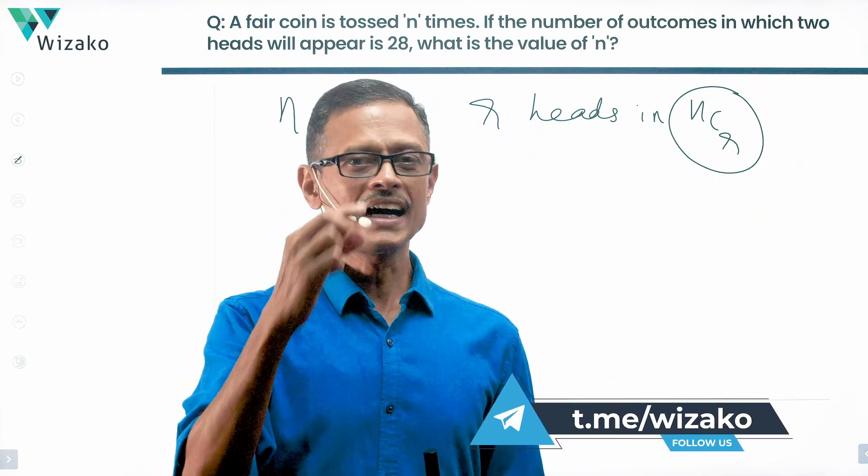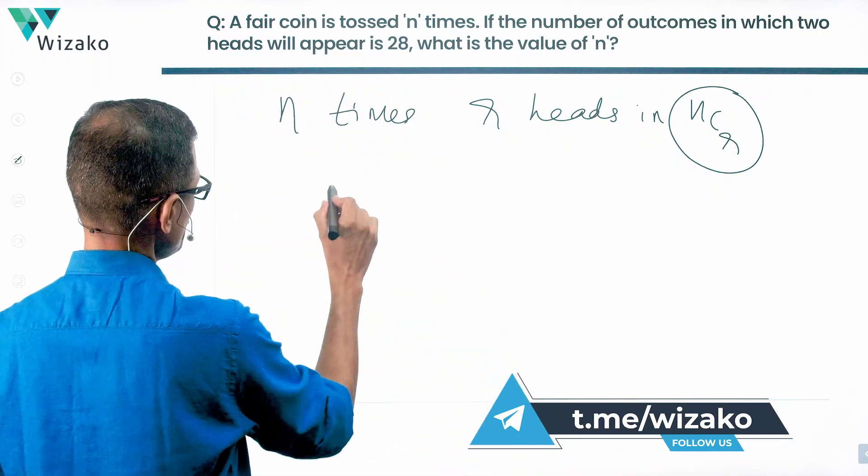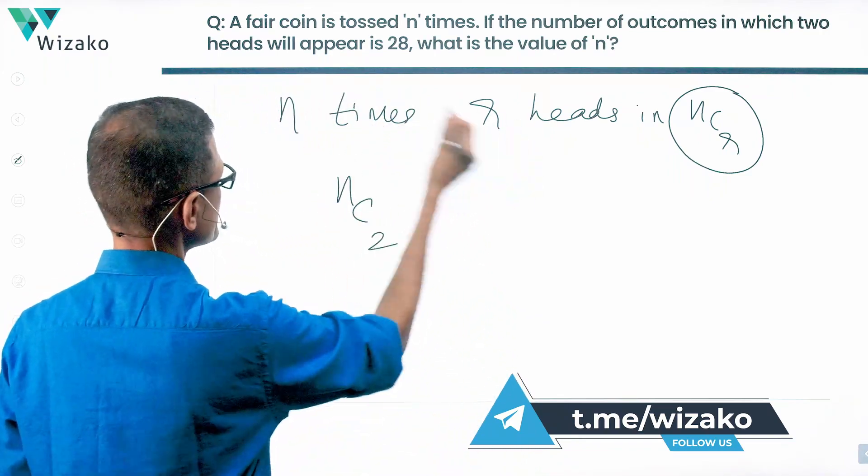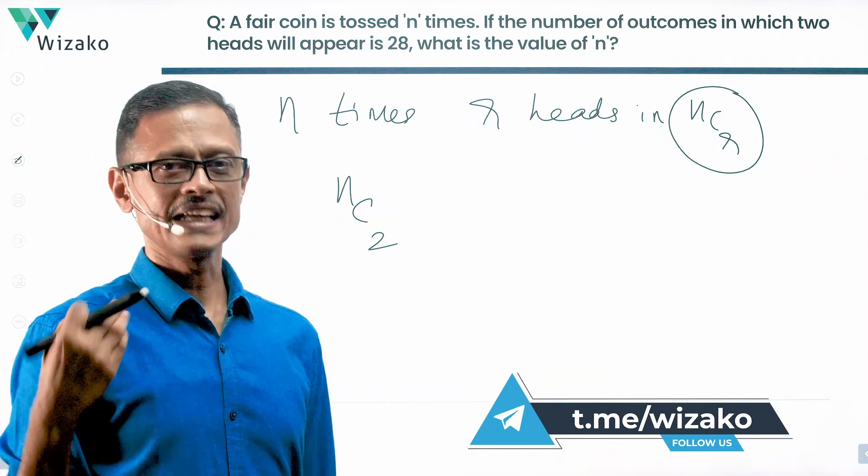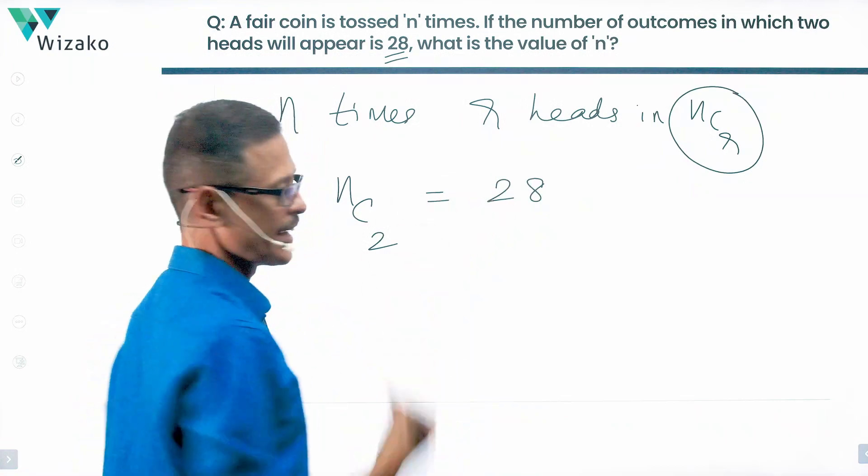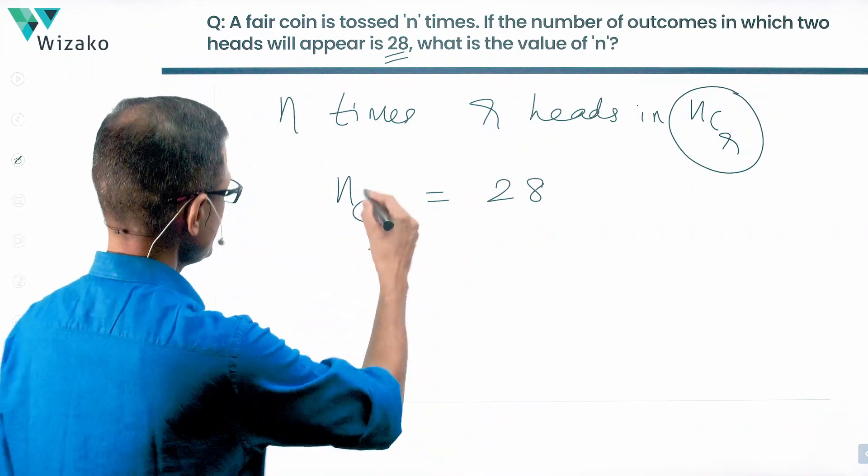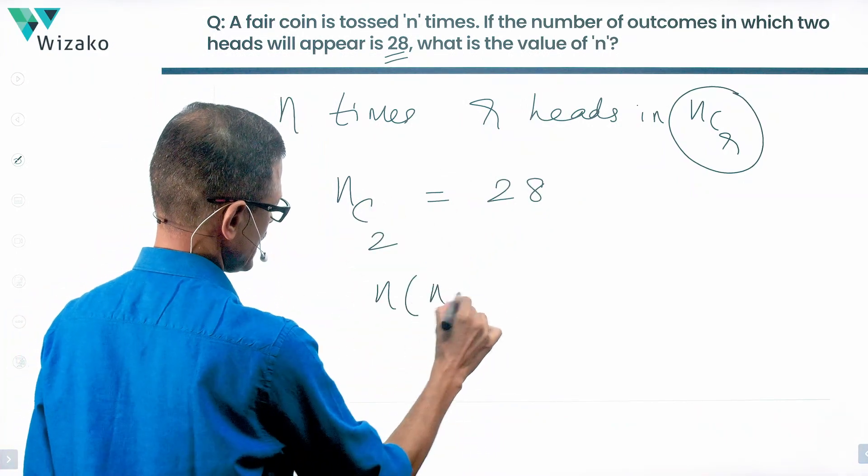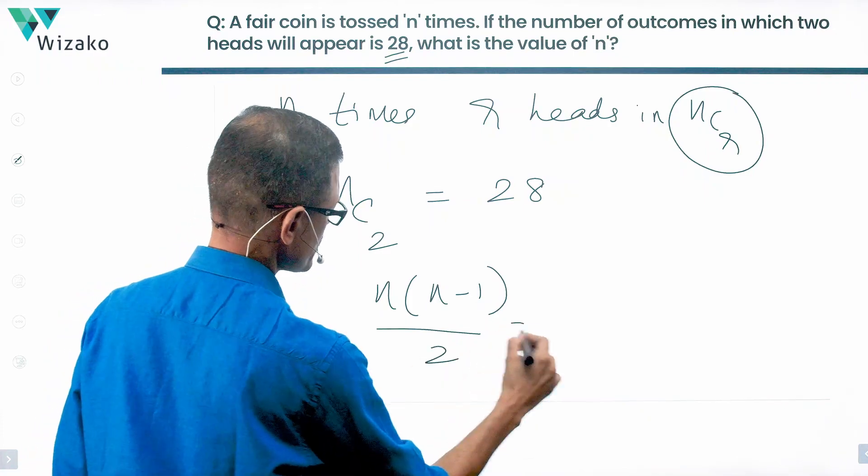So r equals 2 in our case. The number of outcomes in which you'll get two heads when a coin is tossed n times is nC2. The question mentions that this nC2 equals 28. What is nC2? nC2 is n times (n-1) divided by 2. This equals 28.